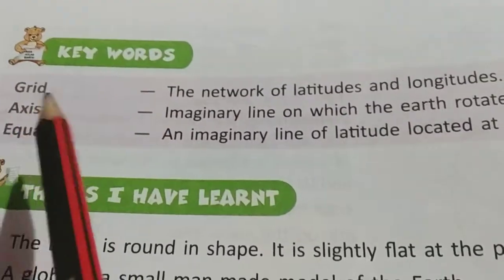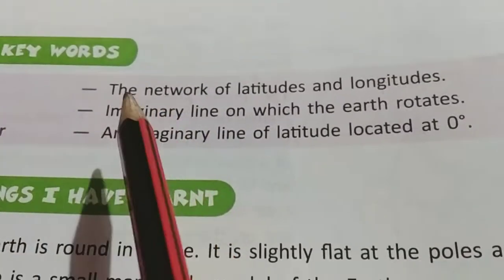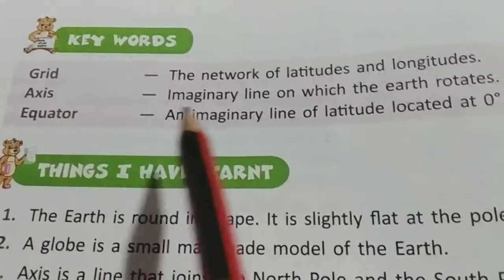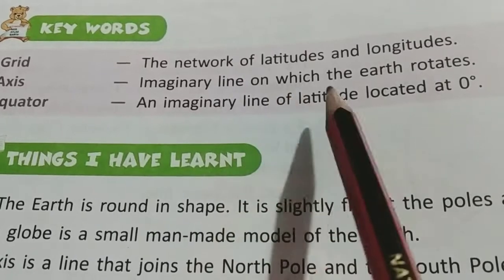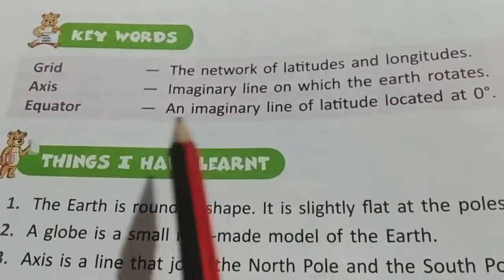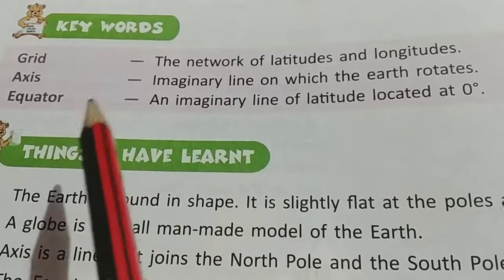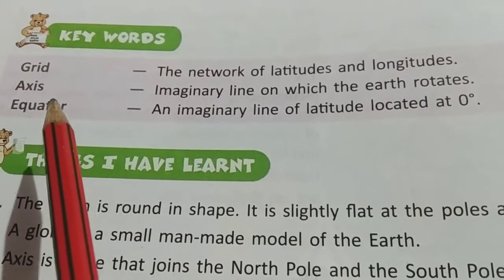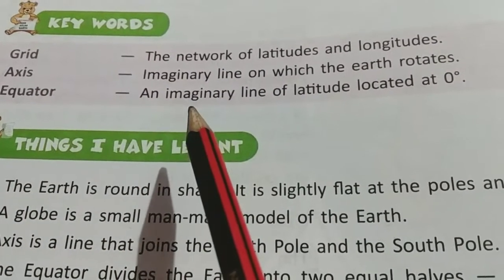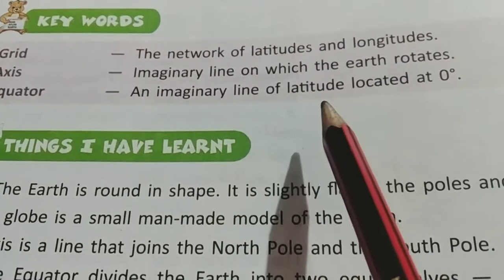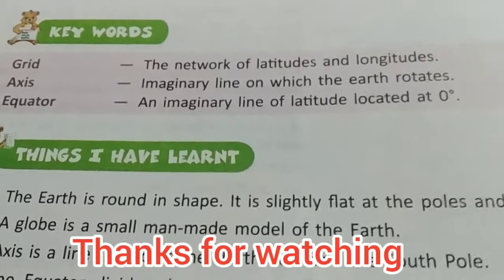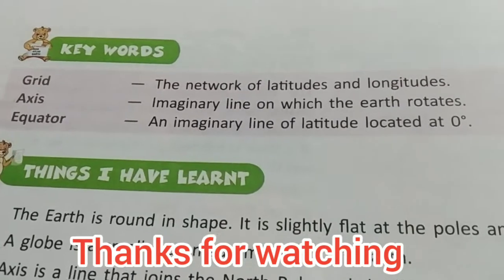Now we will see the keywords. Grid: the network of latitudes and longitudes. Axis: the imaginary line on which the earth rotates. Equator: an imaginary line of latitude located at 0 degrees. That is all for today's class. Bye-bye.